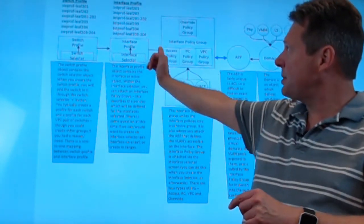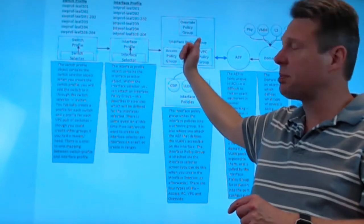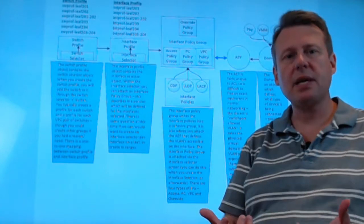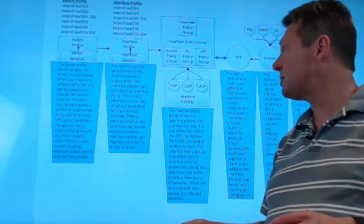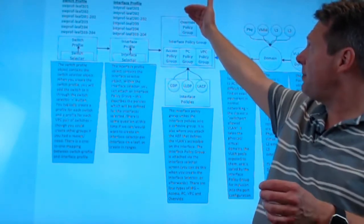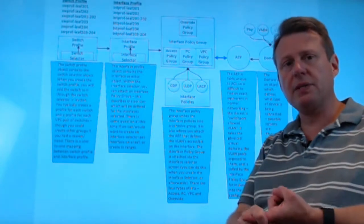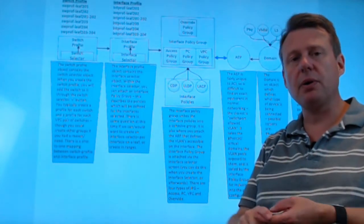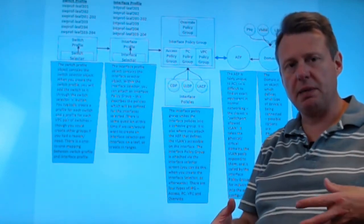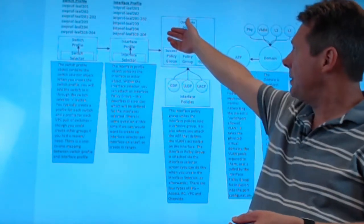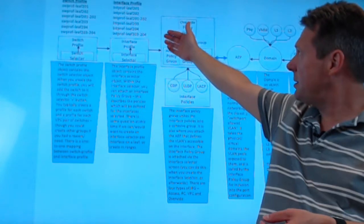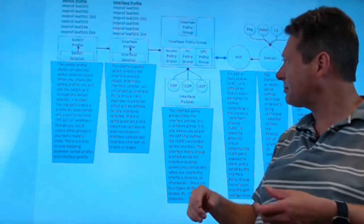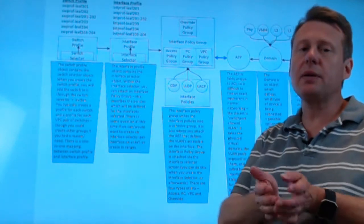After we've done our switch profile and our switch selector, we're going to move over to the interface profile and the interface selector. Very similar process, right? Probably not too surprising. I create my profiles. Again, one interface profile per leaf and then one interface profile per leaves that are in a VPC pair. So again, interface profile for leaf 203, 204, interface profile for leaf 203 and 204. And now you can start to understand the symmetry.